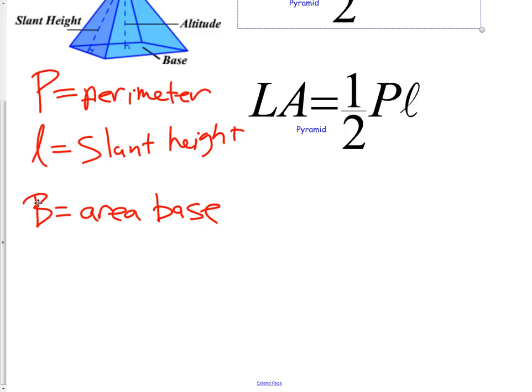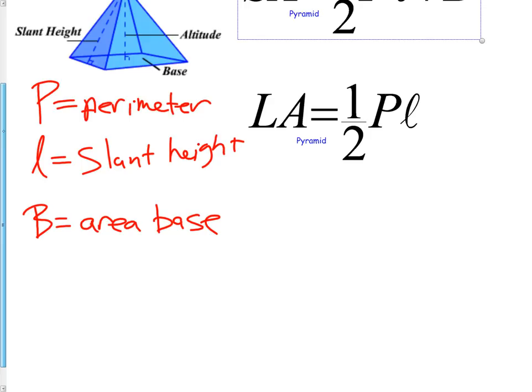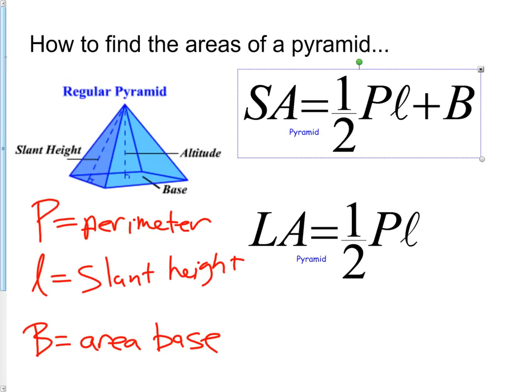You'll start to hear me say more and more that you have to use the right letters in the right cases. So you can't use a little b if you're talking about the area of the base. Then if we want to do lateral area, the only thing we get rid of is the area of the base.